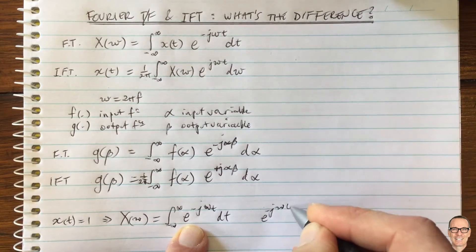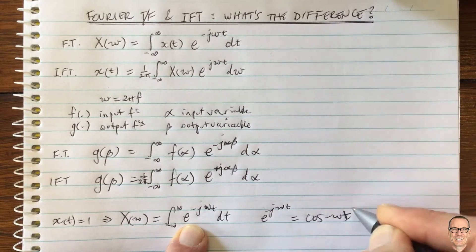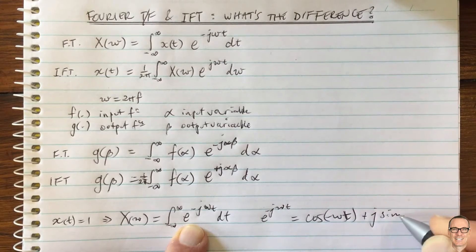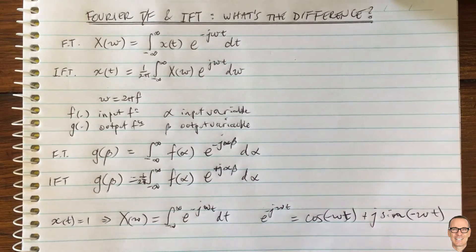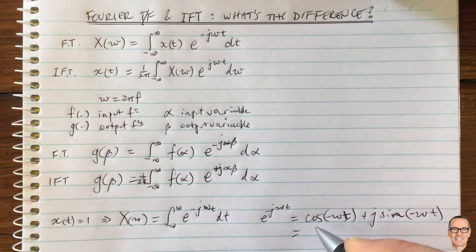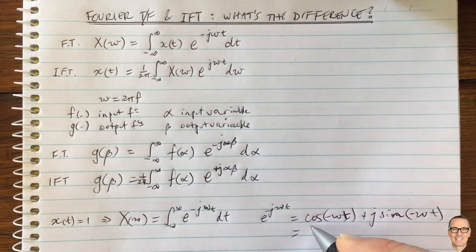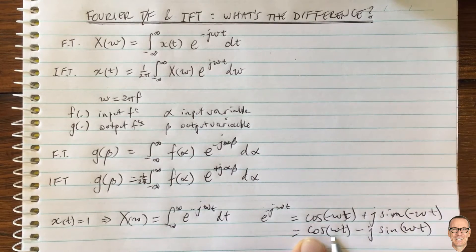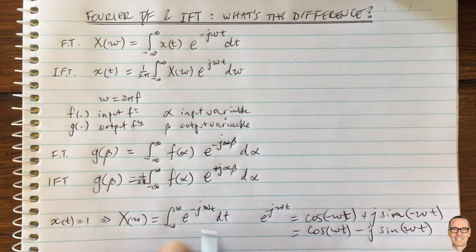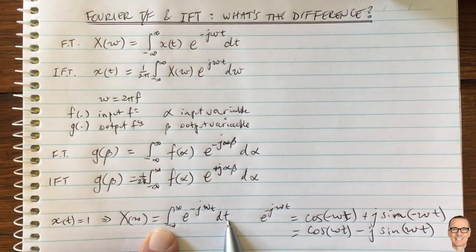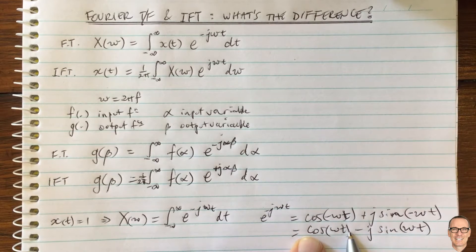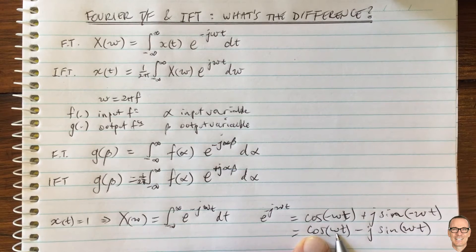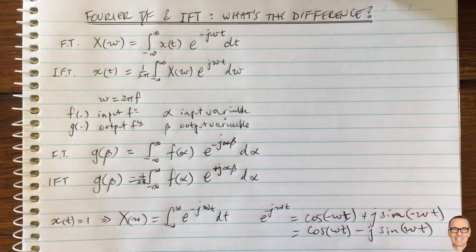Well, e to the minus j omega t equals cos(minus omega t) plus j times sin(minus omega t). Because cosine is an even function, this equals cos(omega t) minus j times sin(omega t), since sine is odd. This is a sinusoidal function integrated from negative infinity to infinity. A cosine function integrated over all time has equal area above and below the axis, so the integral equals zero for any nonzero frequency omega.